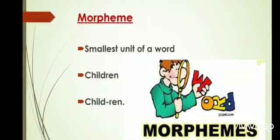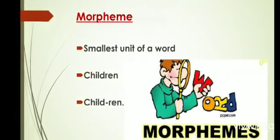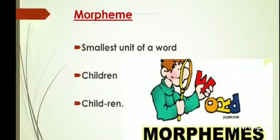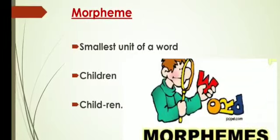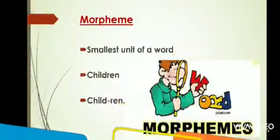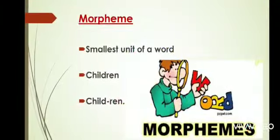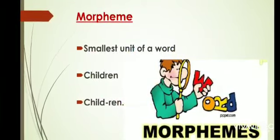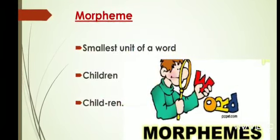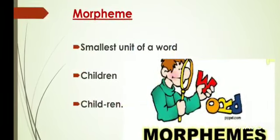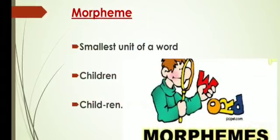Now we will learn what a morpheme is. A morpheme is basically the smallest unit of a word. For example, if we have the word 'children,' when we divide this word — 'children' breaks into smaller parts — that smallest unit is the morpheme.